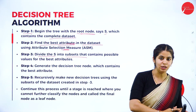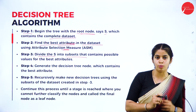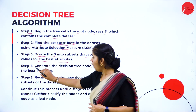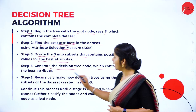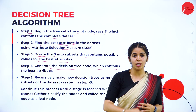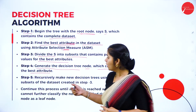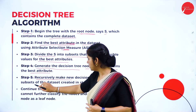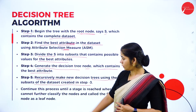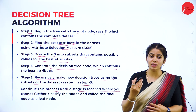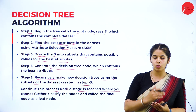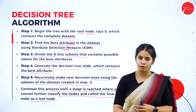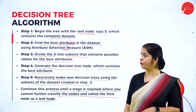Step three: divide the yes into subsets. If the fee structure is feasible, then check whether it is near the house — again one more subtree and decision attribute come into the picture. The subtree constrains the possible values. Step four: generate the decision tree node containing the best attribute. Step five: recursively make new decisions using the subset created in step three. Continue this process until you reach the final stage. The classified nodes are called final nodes or leaf nodes.